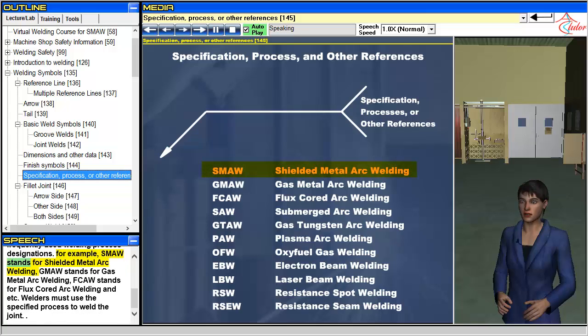For example, SMAW stands for Shielded Metal Arc Welding. GMAW stands for Gas Metal Arc Welding. FCAW stands for Flux Cored Arc Welding, and so on. Welders must use the specified process to weld the joint.